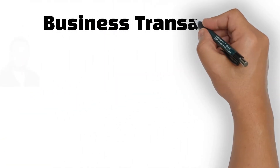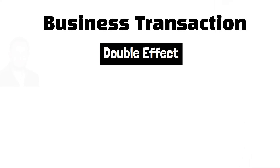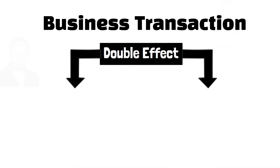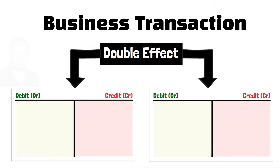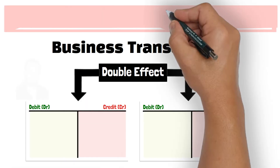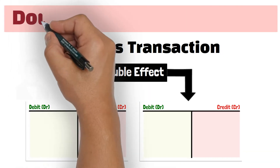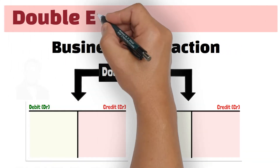So any business transaction has a double effect, and therefore recording any transaction involves at least two accounts. This is what we call the double-entry bookkeeping.